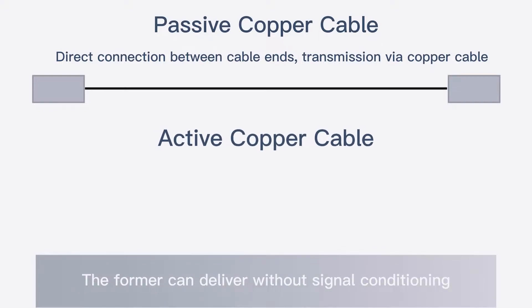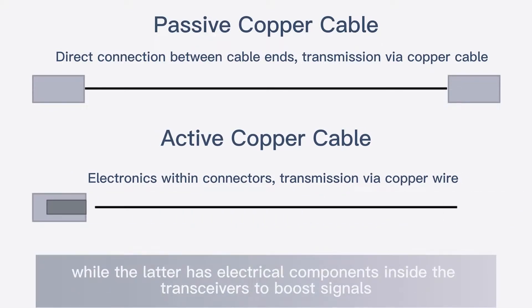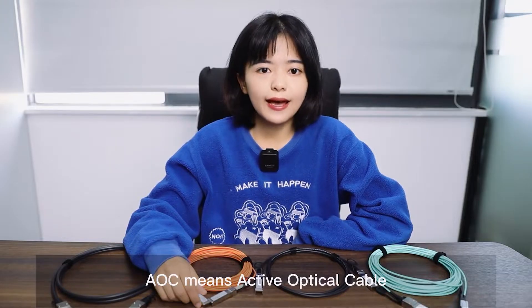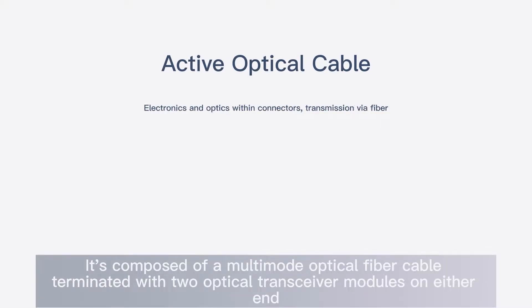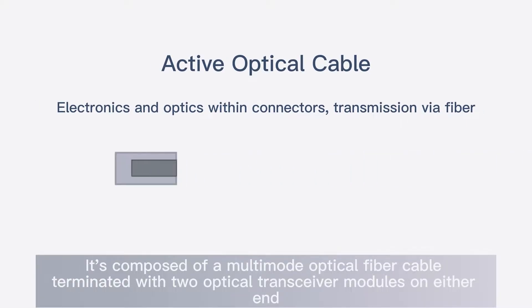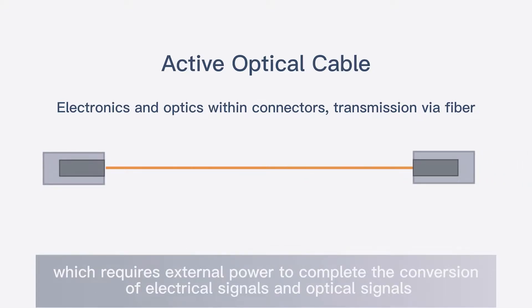The Passive DAC can deliver without signal conditioning, while the Active DAC has electrical components inside the transceivers to boost the signals. AOC means Active Optical Cable. It's composed of a multi-mode optic fiber cable terminated with two optical transceiver modules on either end, which requires external power to complete the conversion of electrical signals and optical signals.